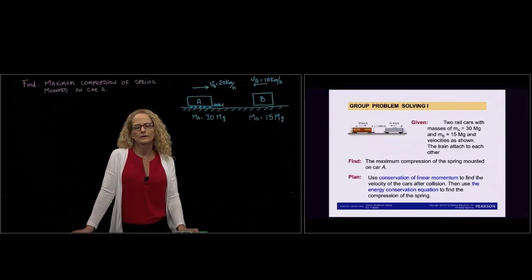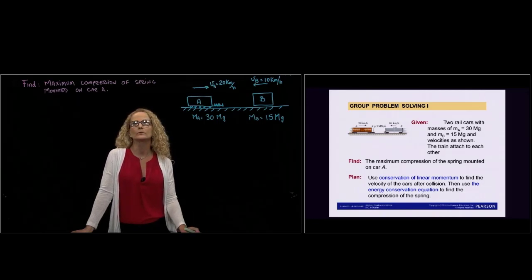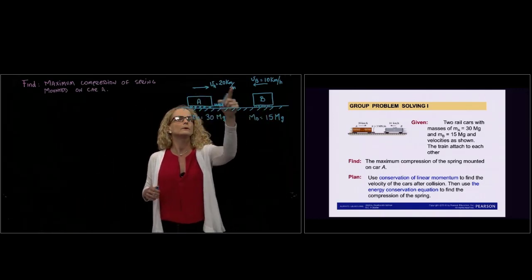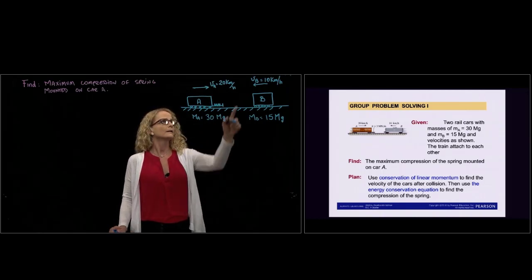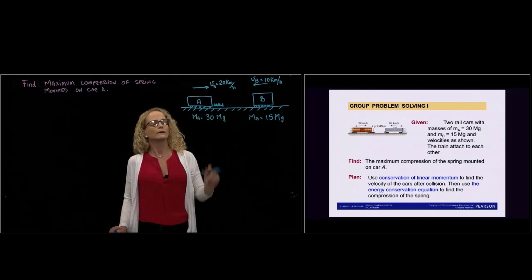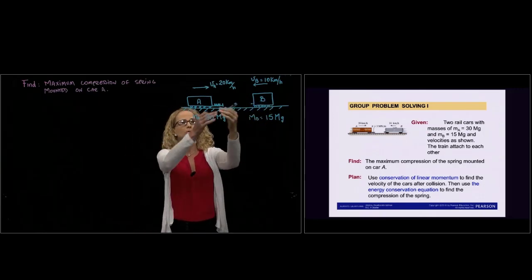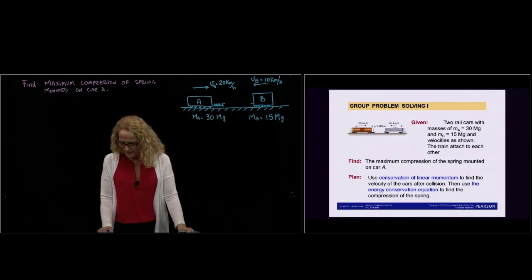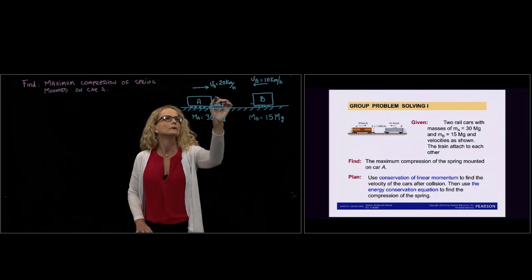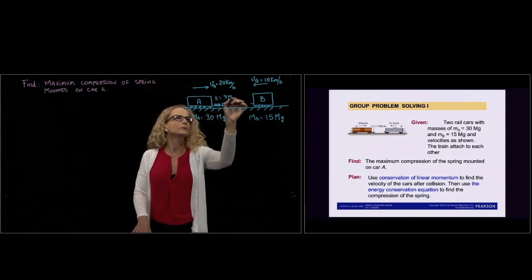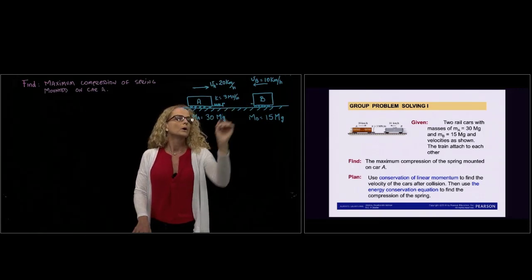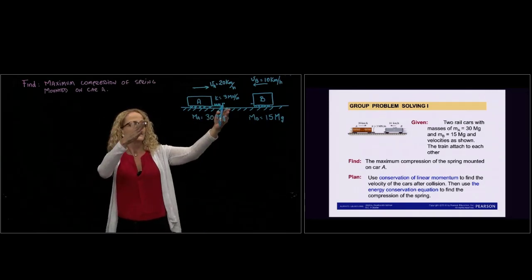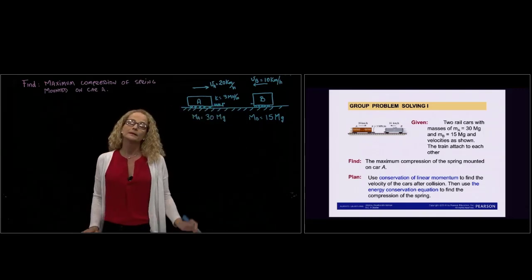Hi, this is Parenthood 5 of Chapter 15, Section 1, 2, 3. So we have two trains here: one moving to the right with a velocity of 20 km per hour, and then train B moving in the other direction with a velocity of 10 km per hour. Those trains eventually meet and they attach together, compressing a spring. The spring has a constant of 3 mega newtons per meter. We are asked to find the maximum compression of the spring when they attach and keep going until the spring is maximally compressed.